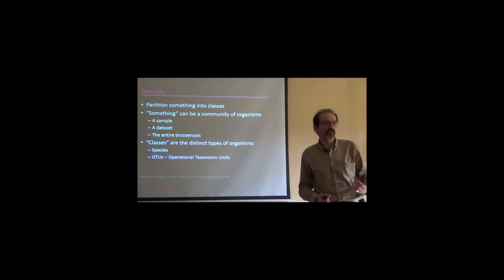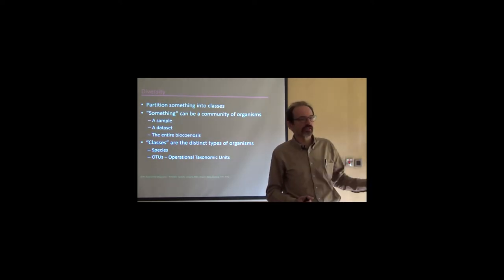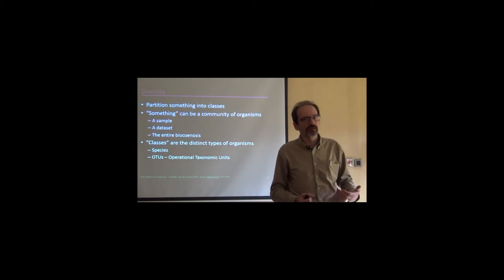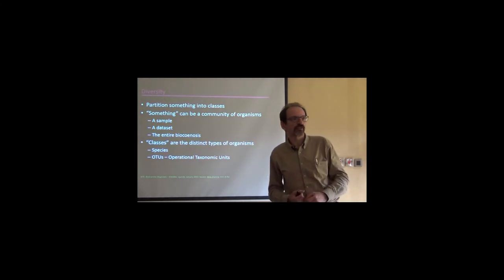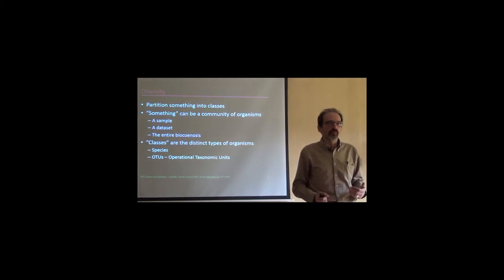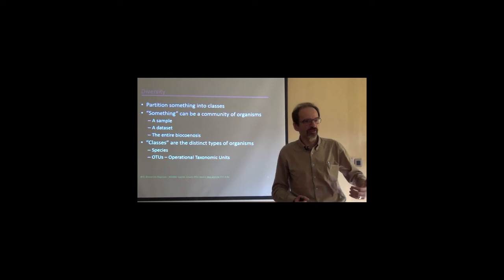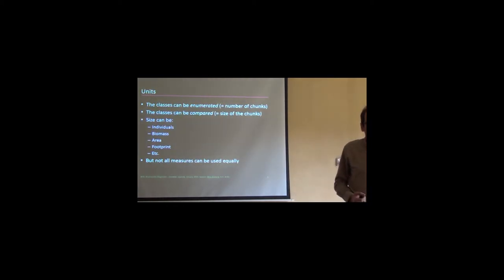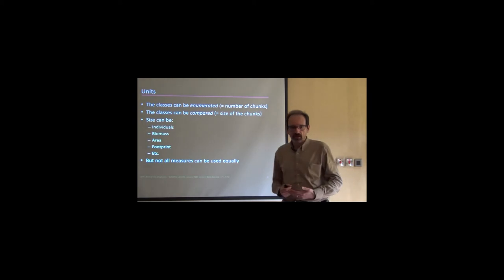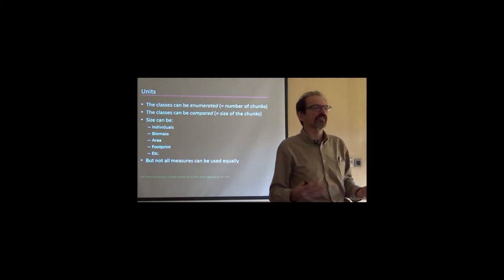Let's go through some of them. But let's look at diversity from a slightly different point of view as we're used to. We're used to thinking about diversity in terms of the number of species or the proportion among abundances. Another way, slightly different way to look at diversity, which is a way proposed by Tuomisto, Jost and others, is to look at diversity as a way to partition something.